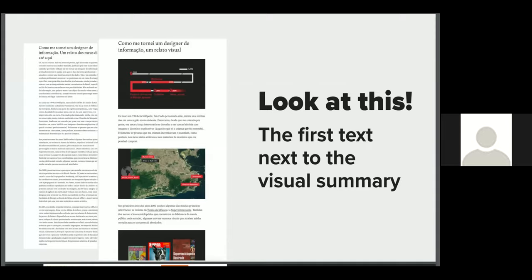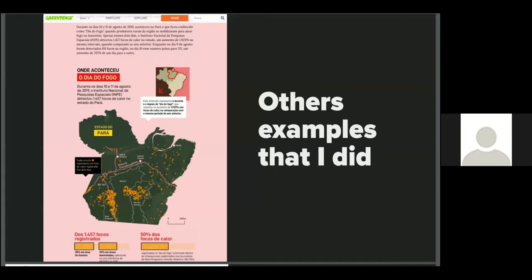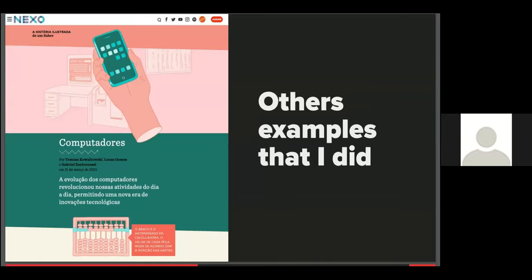And I also brought other examples, works I've done with this perspective and where I learned these tips. This first job is a work about the day of fire in Amazon rainforest. And this is a day where the deforestation was a record in the Amazon. And the other project is a job that I'm doing at Next Journal. It's called the illustrator history of knowledge, where I tell a summary and infographics with my team, the history about scientific discoveries, like the computers, like the insulin, and other summaries.